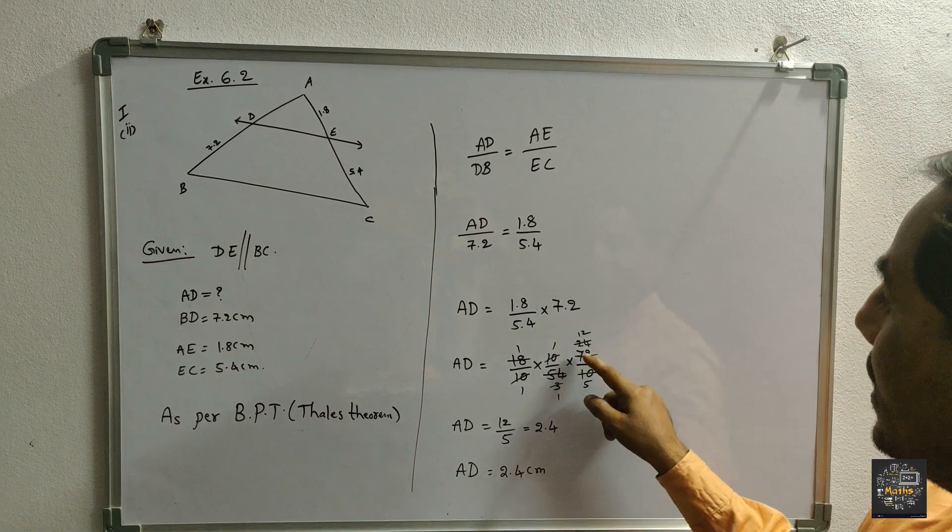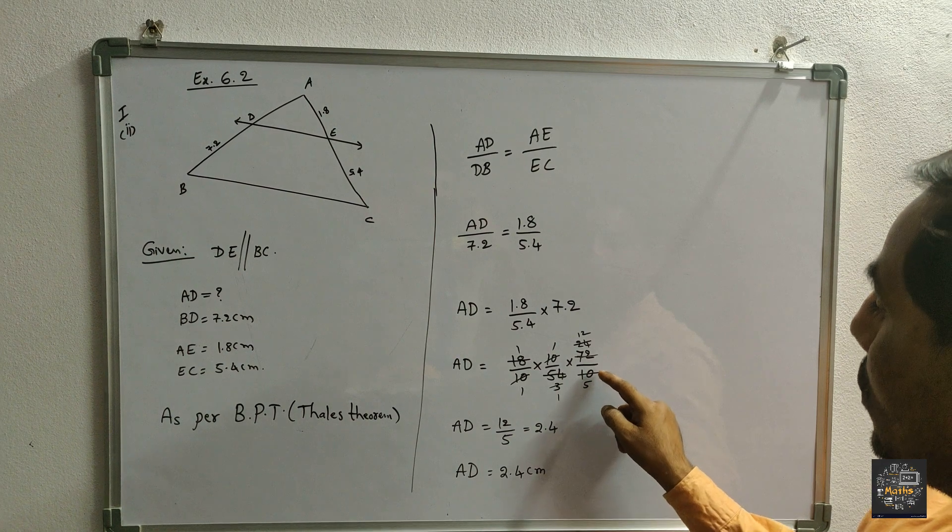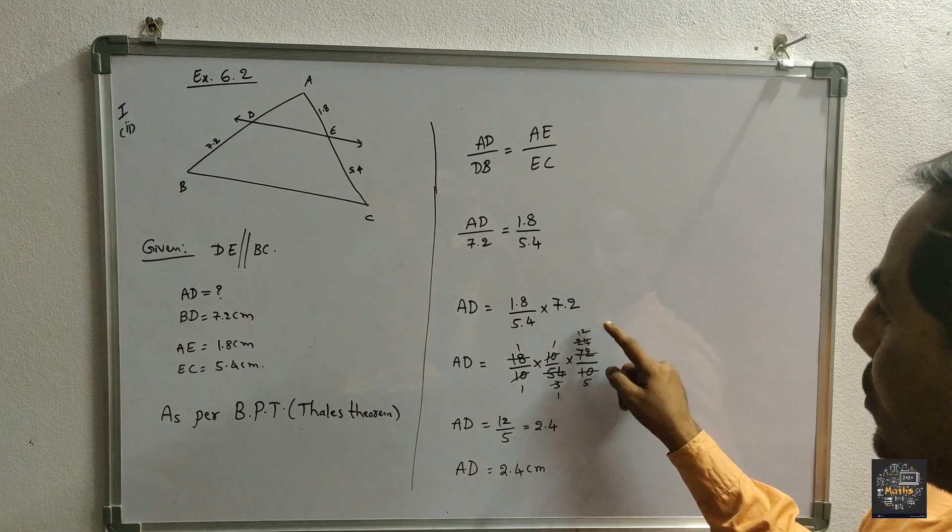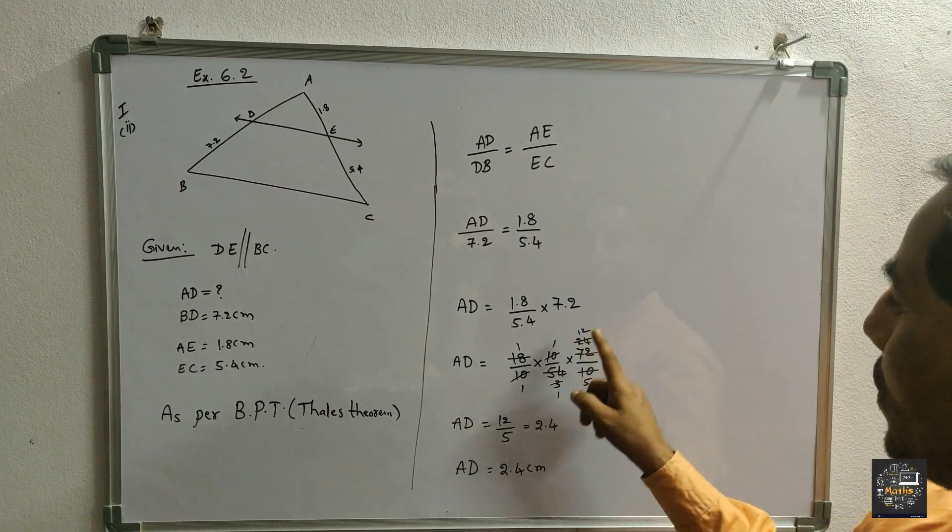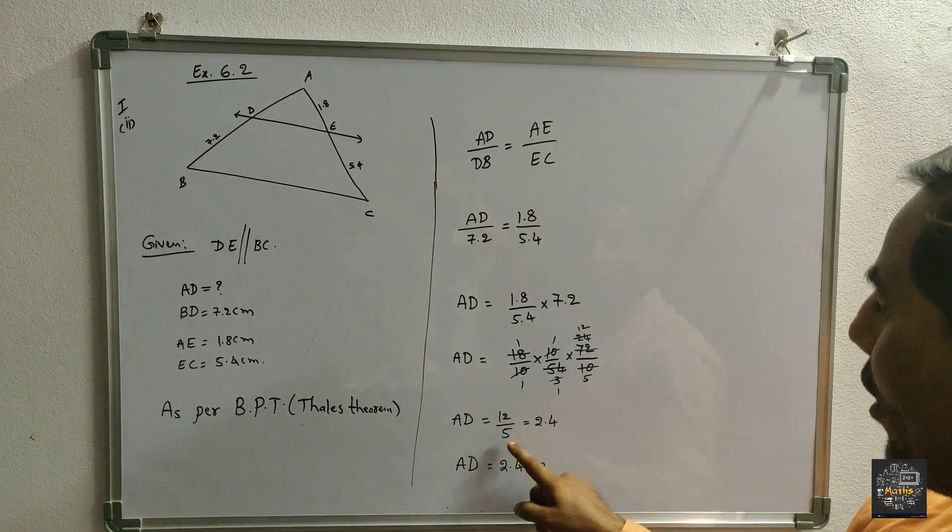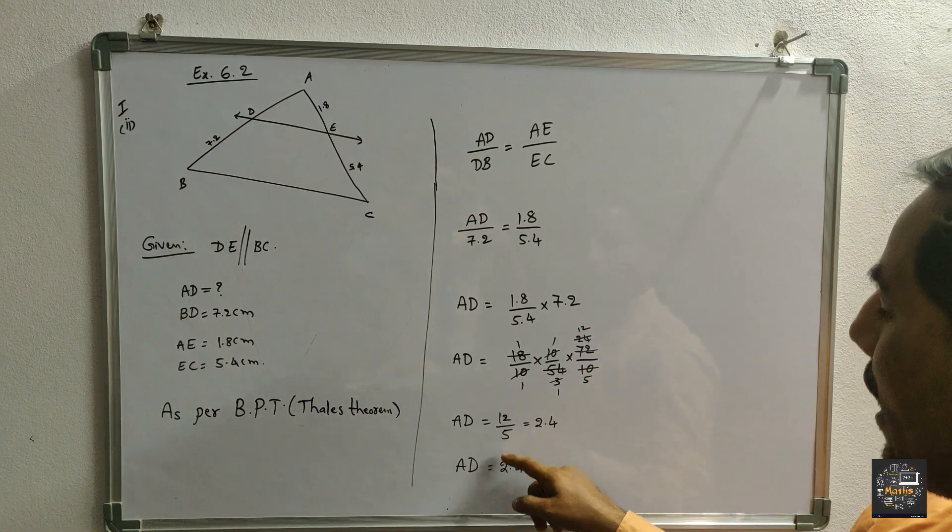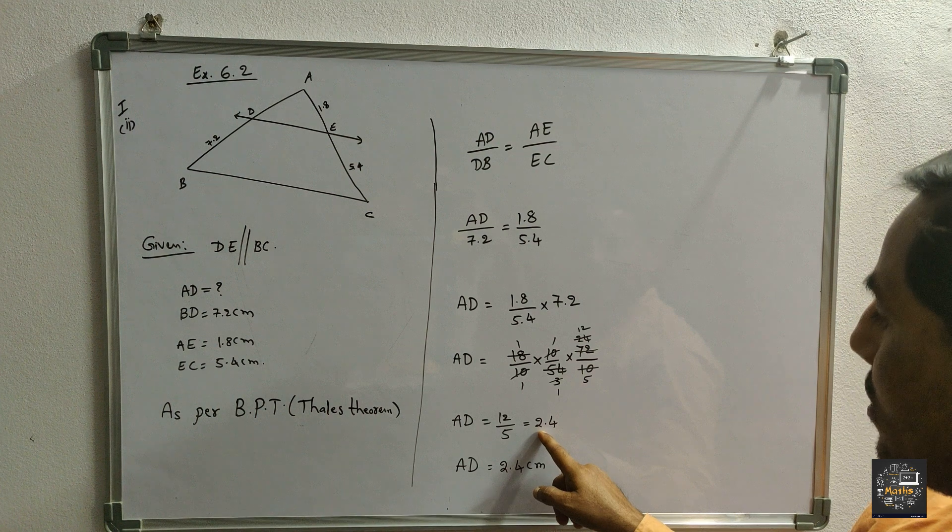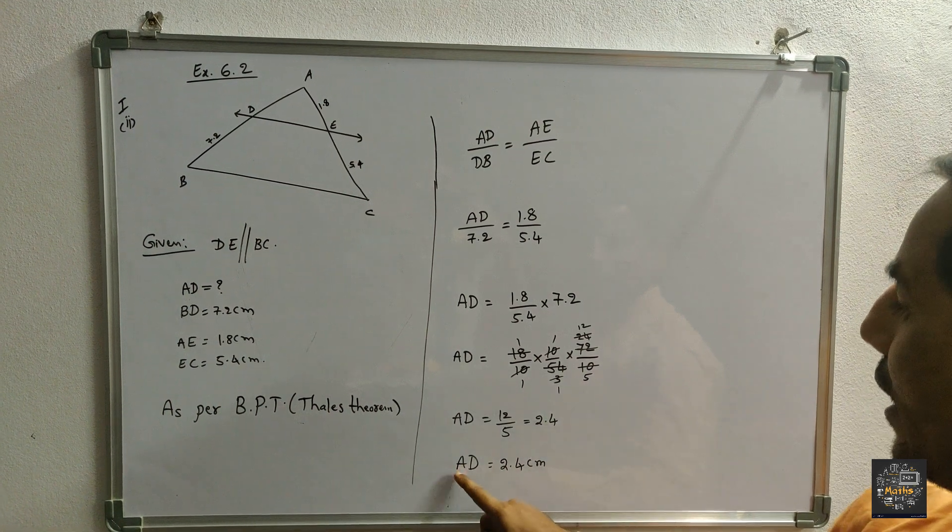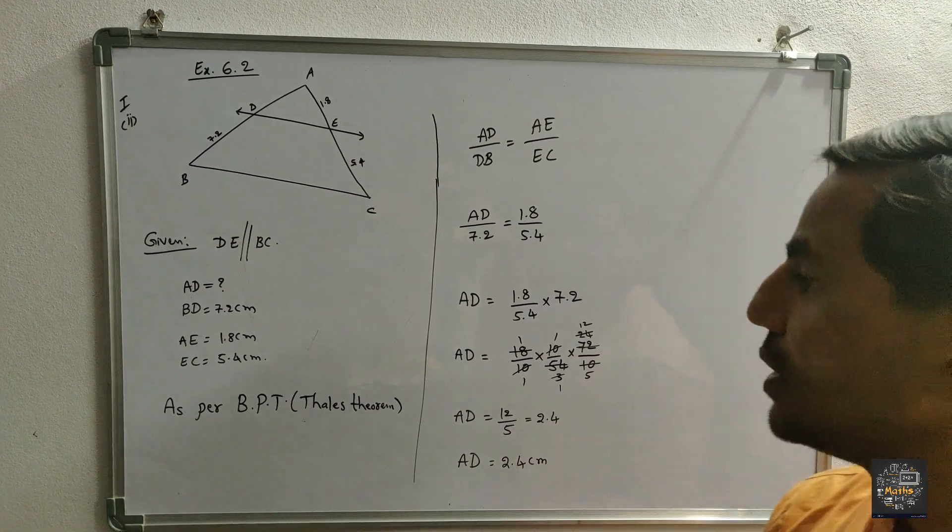So last final AD is equal to 12 by 5. 12 by 5 means 5 into 4 is 20, so AD is equal to 2.4 cm. Therefore AD is equal to 2.4 cm. Thank you.